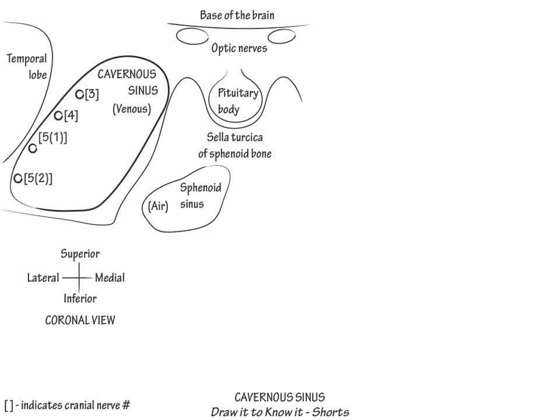Next, medial to the first division of cranial nerve 5, label cranial nerve 6. Then, within the medial aspect of the cavernous sinus, label the internal carotid artery.